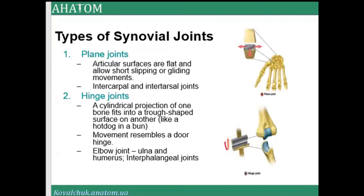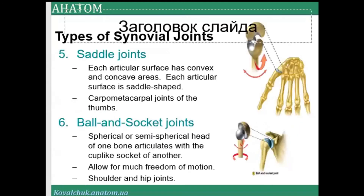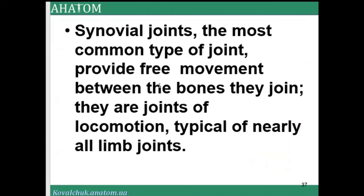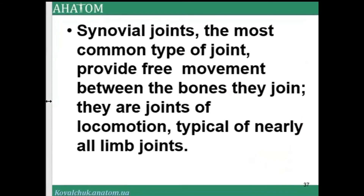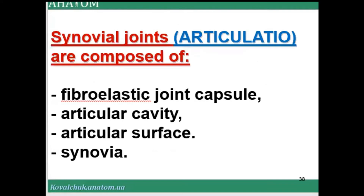Synovial joints have different types: plane, hinge, pivot, condyloid, saddle joint, and ball-and-socket joint. Synovial joints are the most common type, providing free movement between the bones they join and typical of nearly all limb joints. In Latin they are called articulatio. They are composed of a fibroelastic joint capsule, articular cavity, articular surface, and synovia.